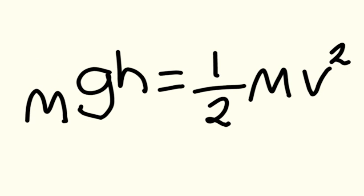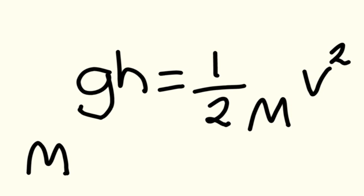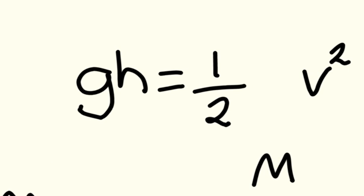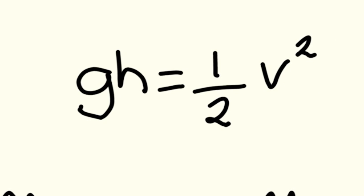So, if we have an M on both sides of the equation, here they go. They're off. They're disappearing. We no longer want them. They cancel each other out. So, let's put this together. It's looking a bit more fruitful, isn't it? We have GH equals half V squared.